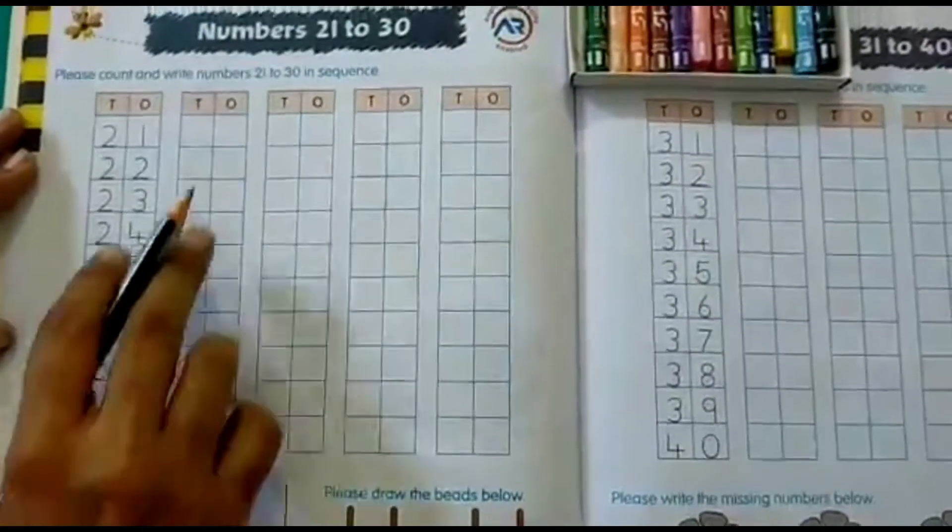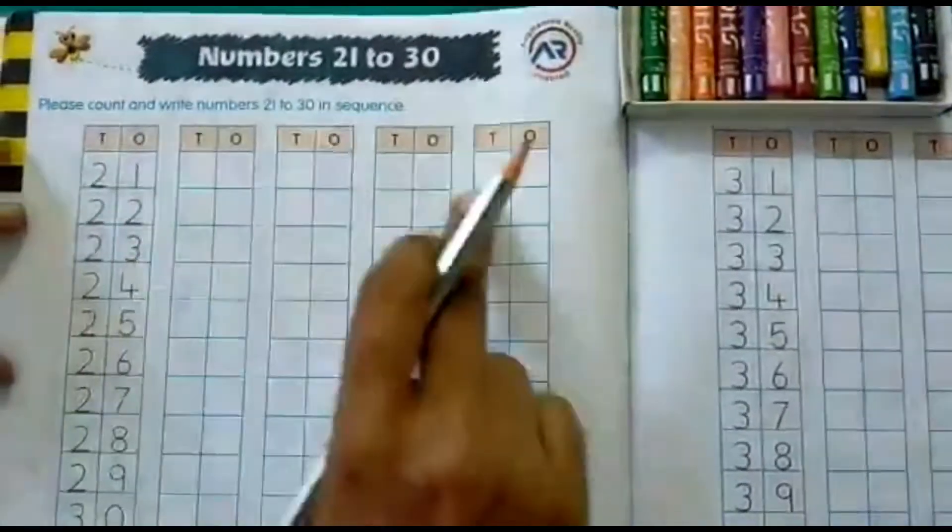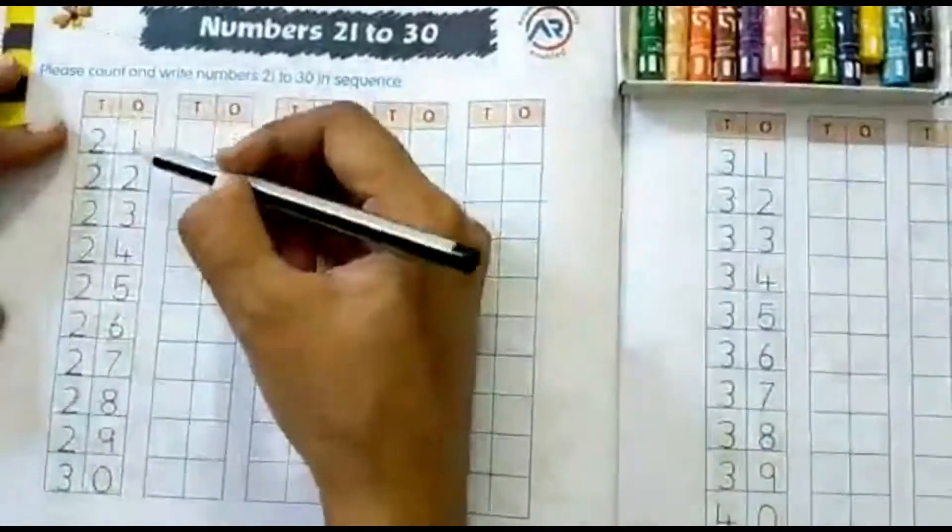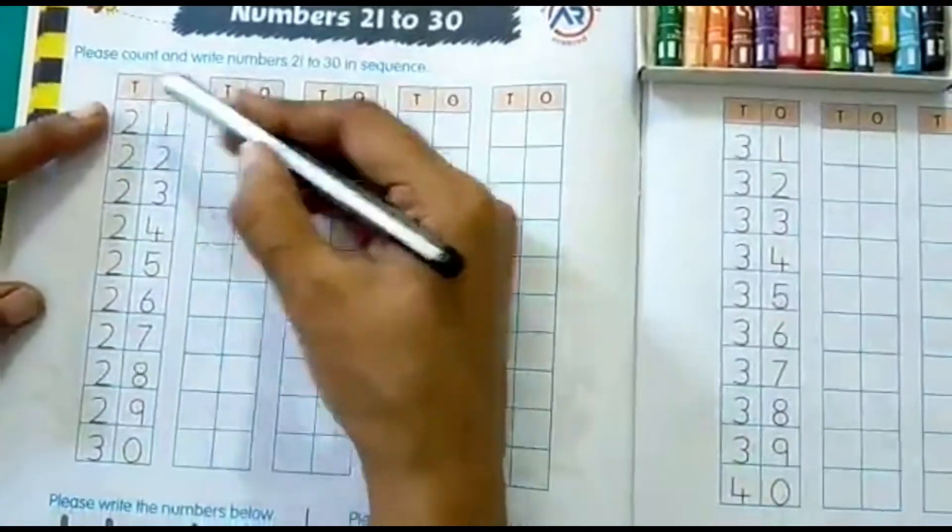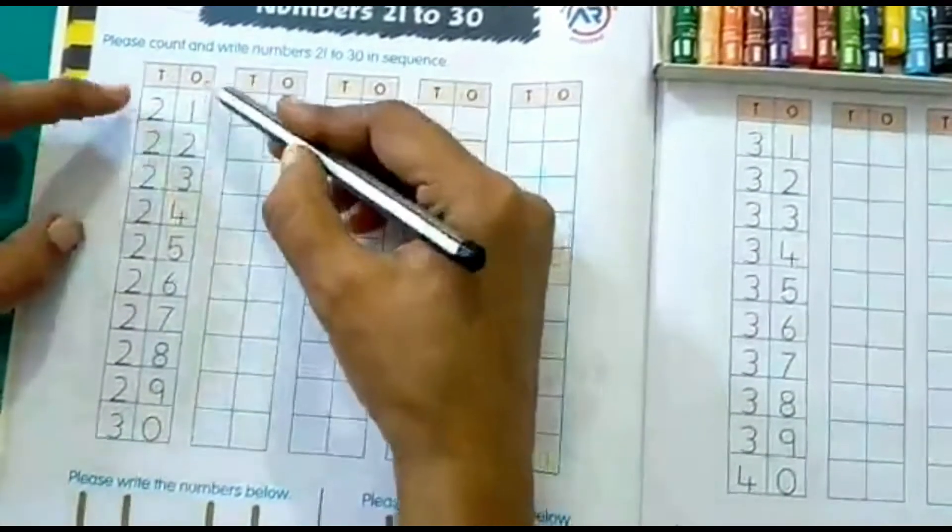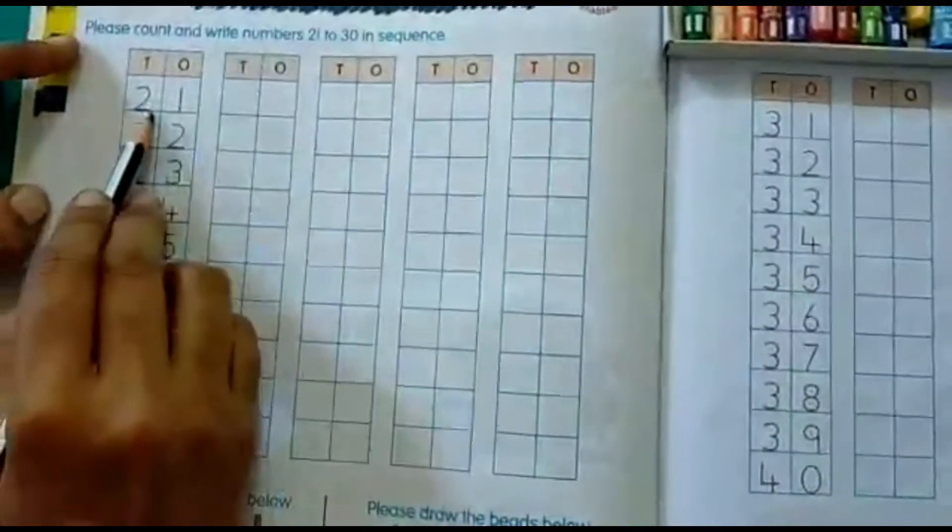Okay, now the first activity we have to write the numbers in these boxes. So how do we write? You can see when we say 20, the 2 comes in the tens place and the other part that is 1, 2, 3, those come in the ones place. Okay, so you have to write it the same way.